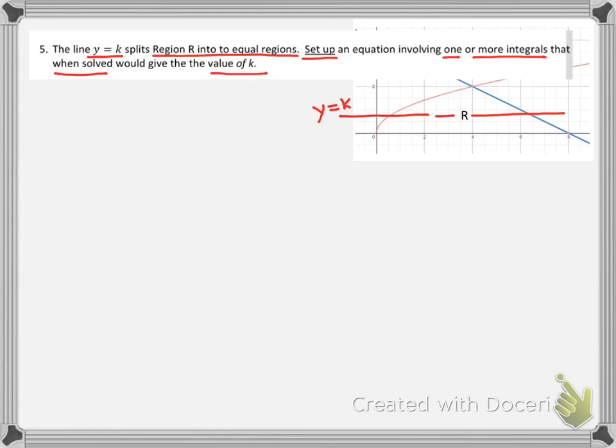So that means if we think about the bottom being area one and the top section being area two, one way we could handle this is area one plus area two equals our total area, and from the very first problem we found that to be nine and a third.